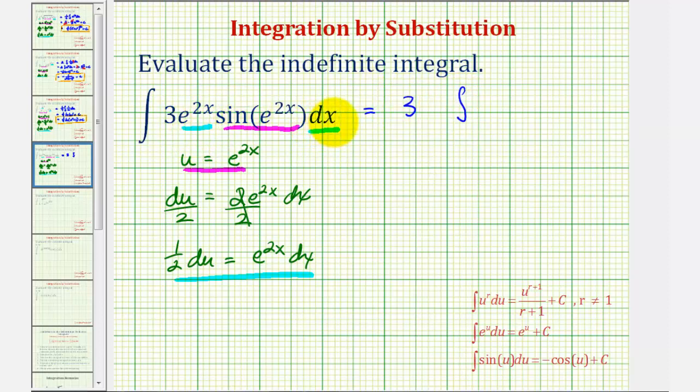Since e to the 2x dx equals one-half du, we'll factor the one-half out. Here's our differential u, and sine e to the 2x is just sine u.